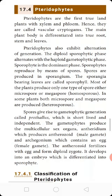In the pteridophyte plants, for example Nephrolepis, on the Nephrolepis plants we have leaf fronds, and on the underside of the leaf, bead-like structures called sporangiums are present. Inside the sporangiums there are numerous spores, which are granular structures. These spores can produce new young plant bodies. The sporangia-bearing leaves are called sporophylls.